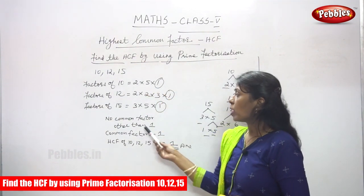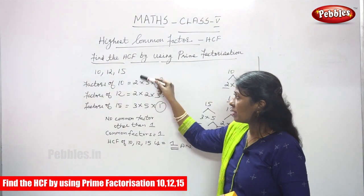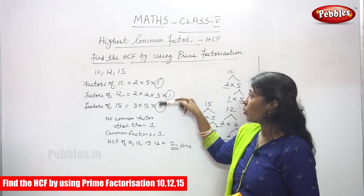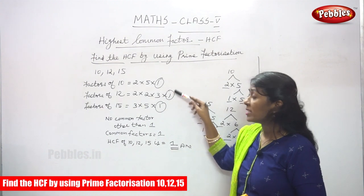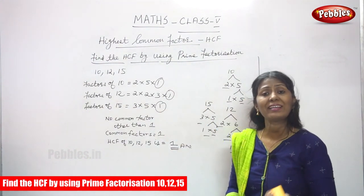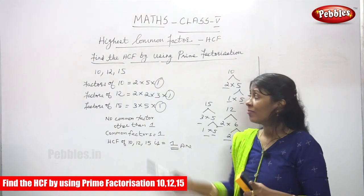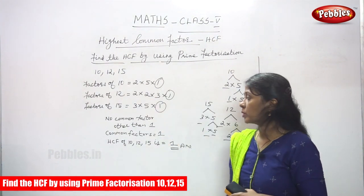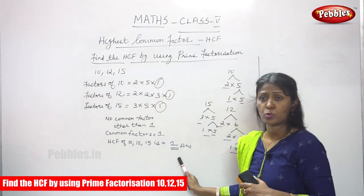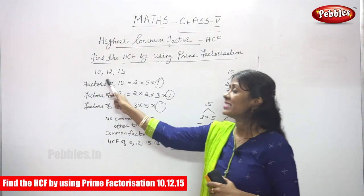There is no common factor other than 1, because there is no common factor in this row. So only 1 is a common factor. Therefore the HCF of 10, 12, and 15 is 1. This is the highest common factor of these numbers.